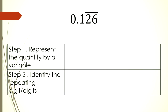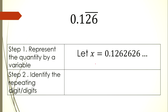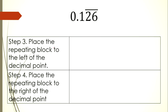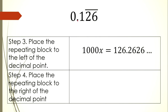We have another non-terminating decimal example: let x = 1.262626... As you can see, the repeating digits are 2 and 6. To place the repeating block to the left of the decimal point, we need to move 3 decimal places to the right, giving us 1000x = 126.262626... Since we moved 3 places, we multiply x by 1,000 on the left side.